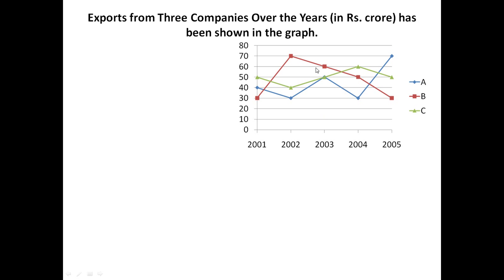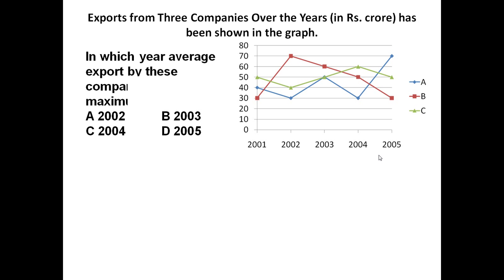A graph is being shown here, and the information given is exports from 3 companies over the years in rupees crore. Export by 3 companies A, B, and C — A is blue color, B is red color, and C is green color. This is the export of the 3 companies in crores over these 5 years shown in the graph.